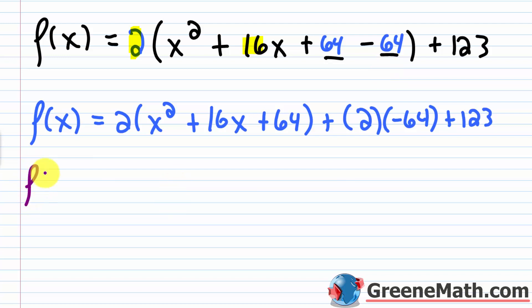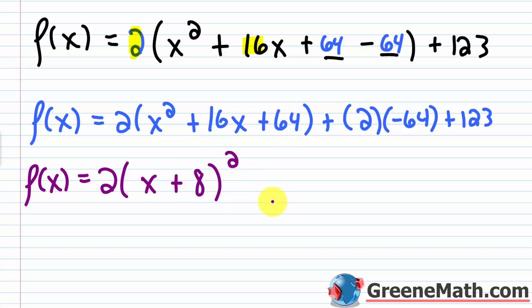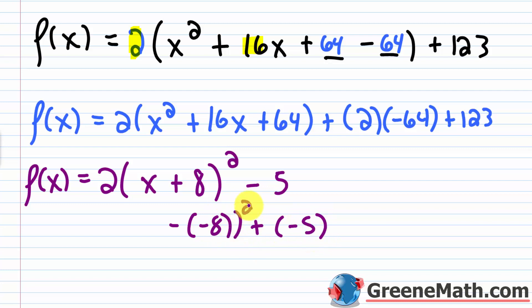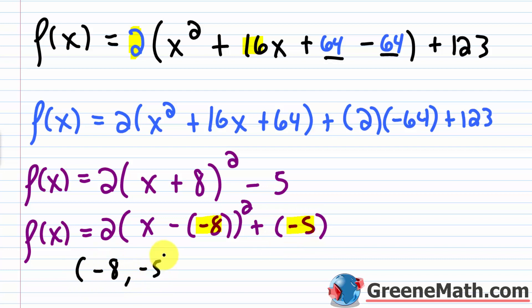Now factor the perfect square trinomial. We know 64 came from squaring 8, so x² + 16x + 64 = (x + 8)². Then −128 + 123 = −5. So the vertex form is f(x) = 2(x + 8)² − 5. Writing this to match the standard format, x + 8 = x − (−8), so the vertex is at negative eight comma negative five.